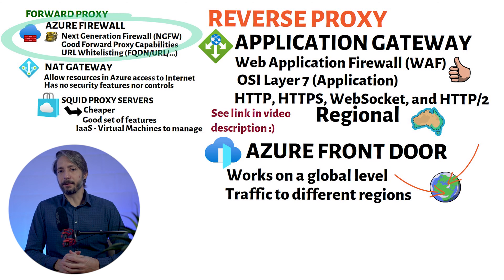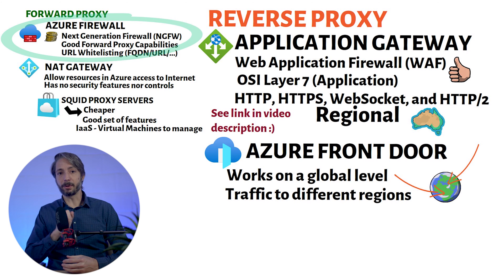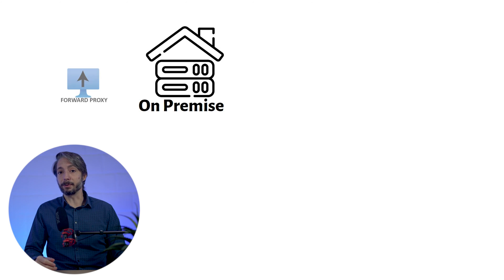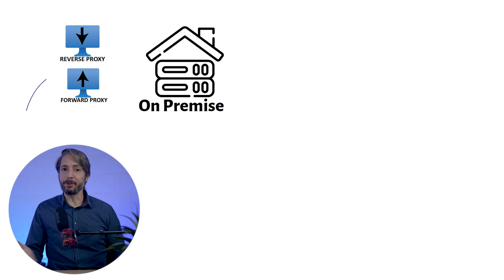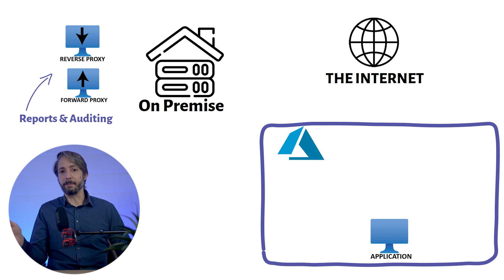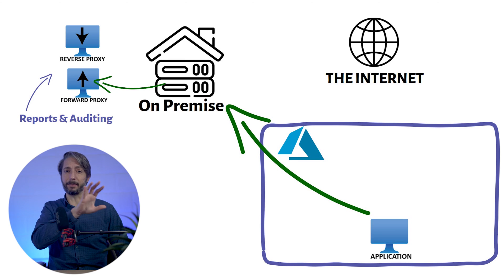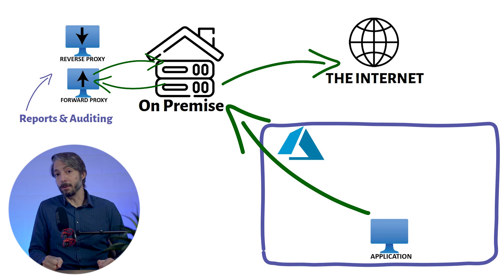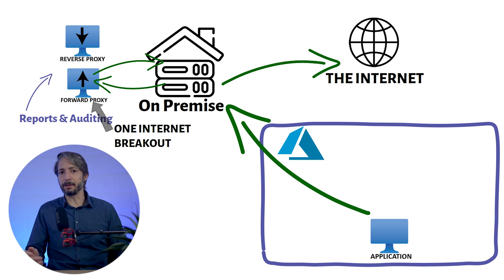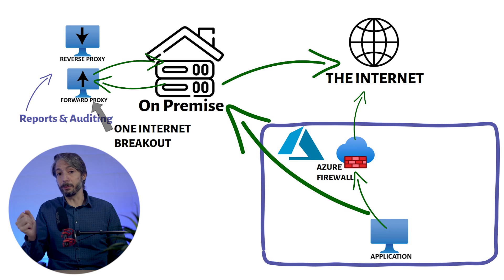We now know that we have different options in Azure for both forward and reverse proxying. The more complicated question is: how do we approach this in a real-world scenario? Most enterprises already have an existing forward and reverse proxy solution located on-premise. They may be used to the reports and security offered by that proxy server and are a little reluctant to change. So, is it really good practice to route all the traffic from Azure to an on-premise forward proxy? Well, technically it's possible, and in some scenarios it may even be a good solution — for example, if you have multiple cloud environments, there is then only one internet breakout to manage. However, I always prefer to send traffic directly from Azure to the internet through a forward proxy located in Azure.